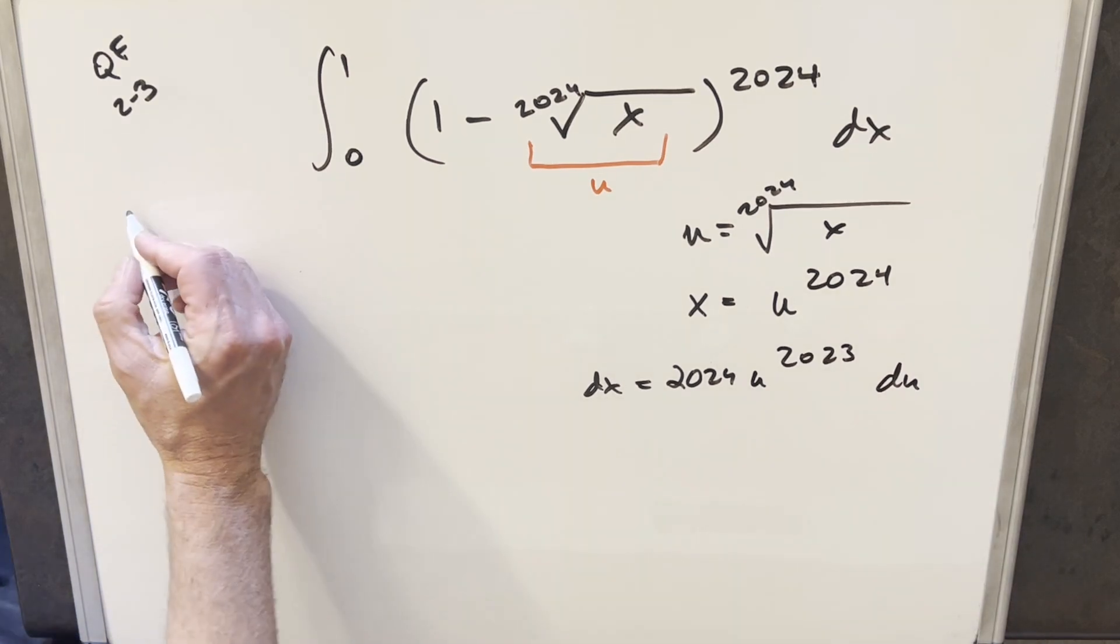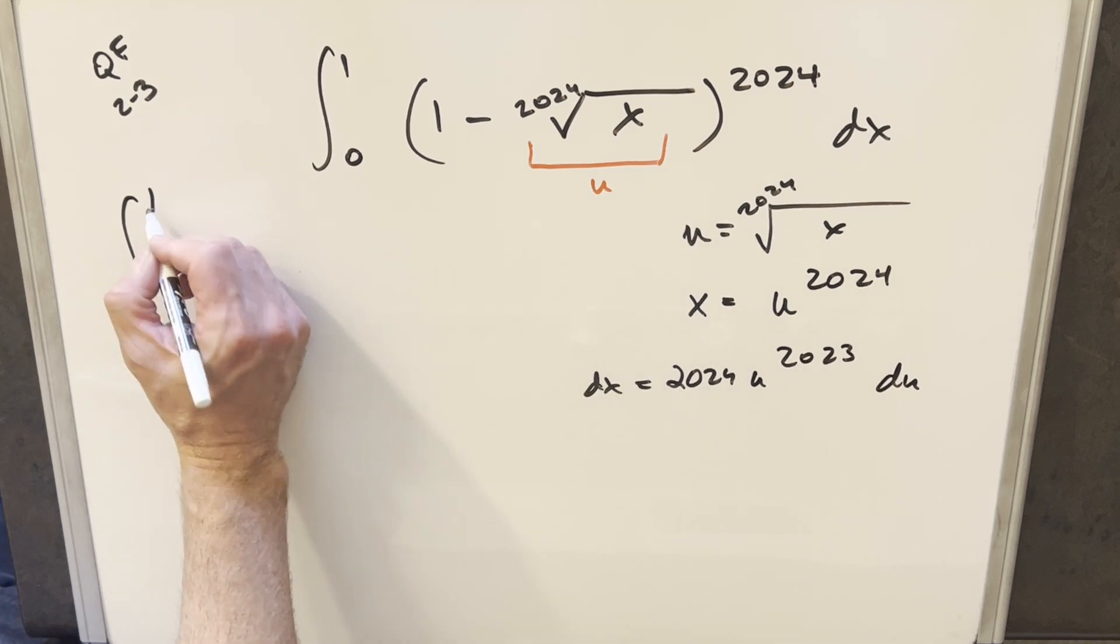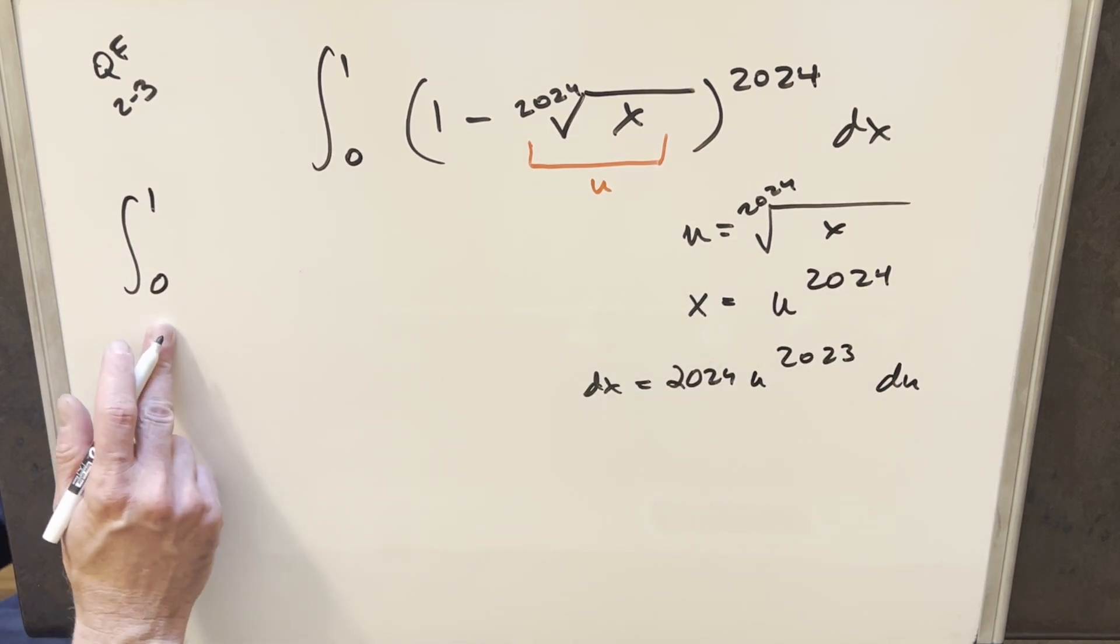2024 u to the 2023 du. And I'll go ahead and we'll just do this. So first updating the bounds, plugging in 1, the 2024th root of 1 is just 1, and then you plug in 0, and this is still 0. So that's nice. The bounds didn't change at all.